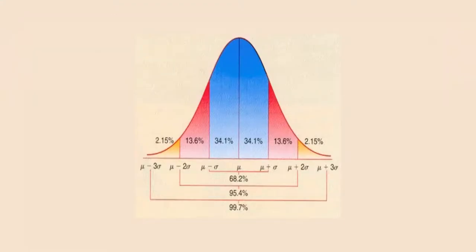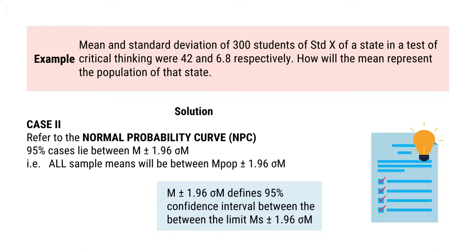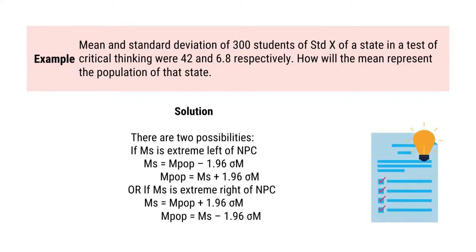Case 2: From the normal probability curve, 95% of cases lie between m plus minus 1.96 sigma m. All sample means will be between population mean plus minus 1.96 sigma m. So, m plus minus 1.96 sigma m defines the 95% confidence interval between the limits sample mean plus minus 1.96 sigma m. If the sample mean is at the extreme left — a negative deviation — then sample mean equals population mean minus 1.96 sigma m, so population mean equals sample mean plus 1.96 sigma m.